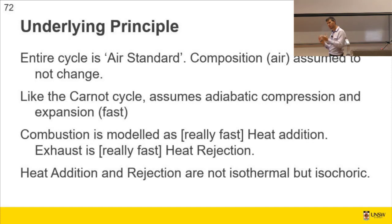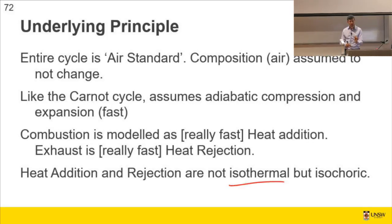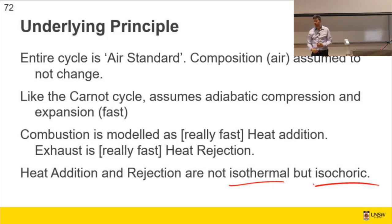The Carnot cycle introduced us to adiabatic compression and adiabatic expansion, and we use those in the Otto cycle as well. We say heat transfer is minimal because things happen fast — you can either insulate or do things fast to approach adiabatic conditions. We do them fast. Combustion: the spark ignites the heat very quickly, and the exhaust is modeled as instantaneous heat rejection. In Carnot's cycle, he added heat isothermally. The Otto cycle — which is a real cycle we can do something with — says it's not isothermal but constant volume, isochoric. We can model it as isochoric because it happens quickly.